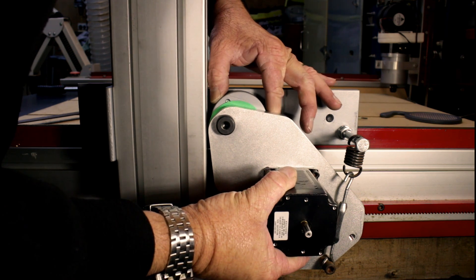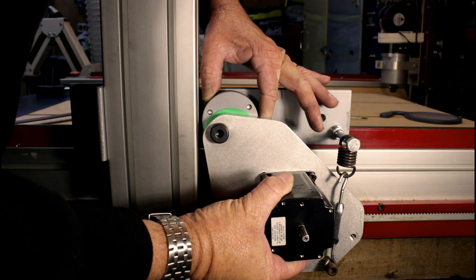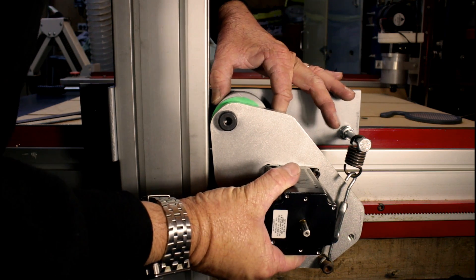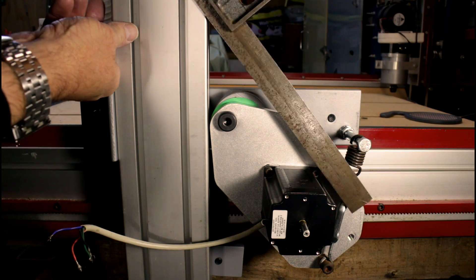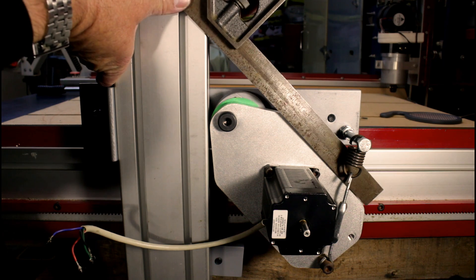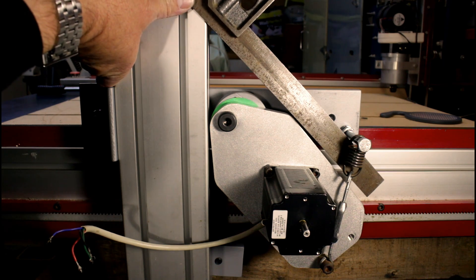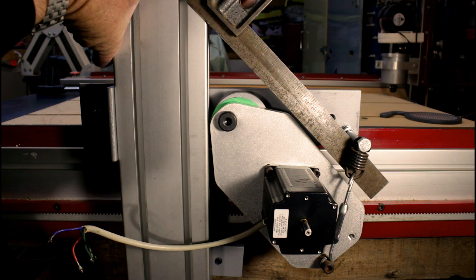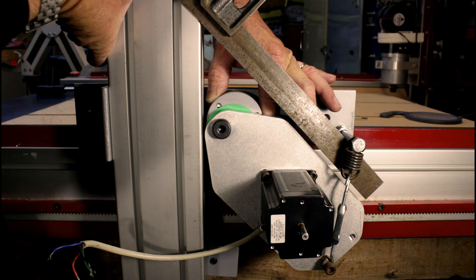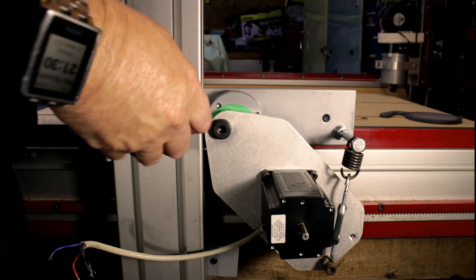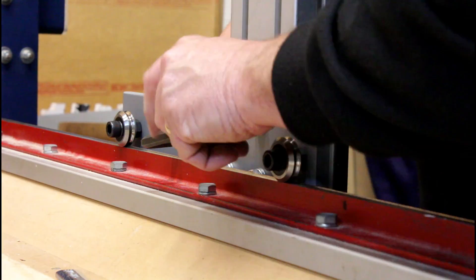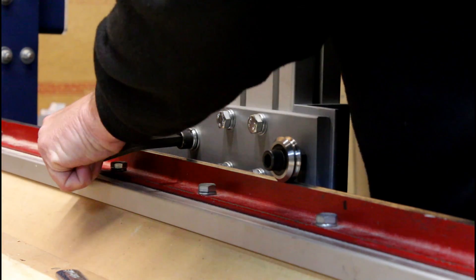So by having it at 45 degrees, that's the best compromise where it shouldn't jump out while you're using it. I can put the square against the extrusion, and you can see the angle is off. But by rotating the cam, the angle adjusts, and now it's 45 degrees. I simply now need to re-tighten the bolt that secures the cam adjustment in place.